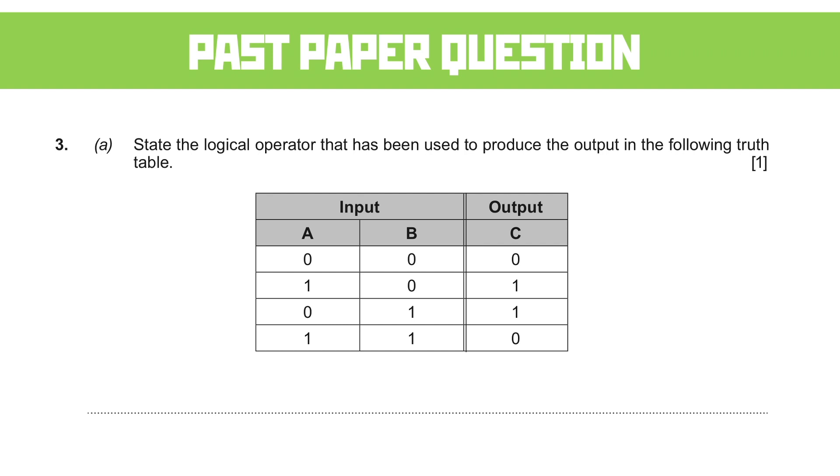There are only four operators or gates that you need to know about, and that's the NOT, AND, OR, or XOR gates that we've already looked at. Pause the video now and see if you can work it out.